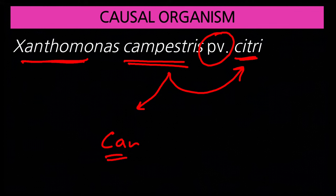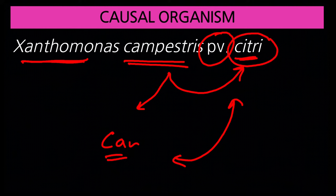In the morphology and structure of these two bacteria — pathovar citri and pathovar campestris — there is no difference. Both are the same. The only difference is that one causes disease in citrus and the other causes disease in crucifers.